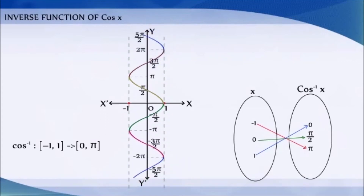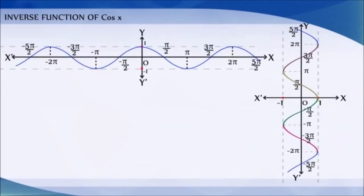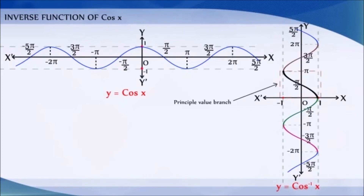These are the graphs of y = cos x and y = cos⁻¹(x). The dark portion of the graph of y = cos⁻¹(x) represents the principal value branch.